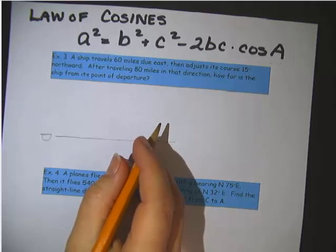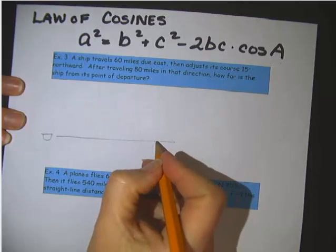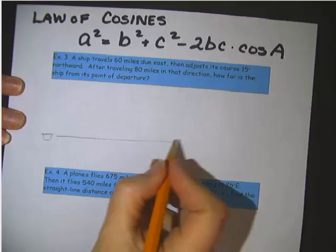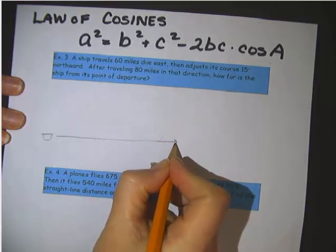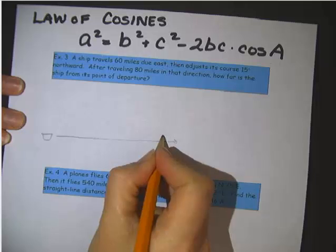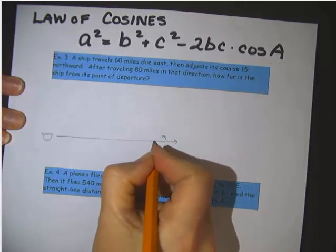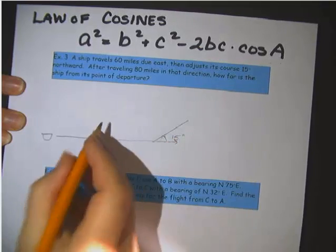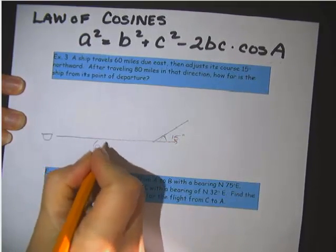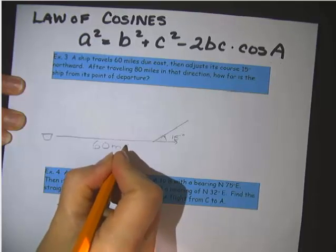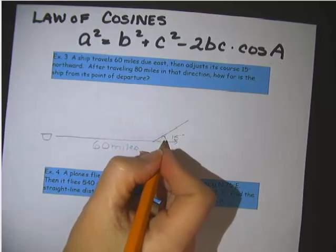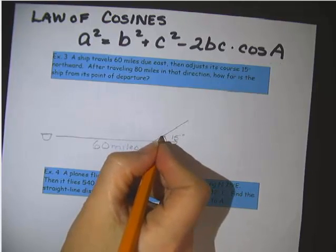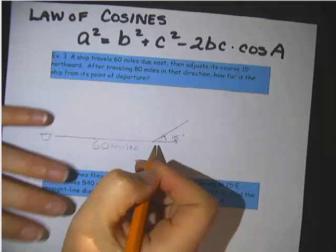And after traveling 60 miles, it adjusts its course 15 degrees. Now I see a lot of times when people draw this one, they try to go 15 degrees in this direction. But remember, it's going to adjust its course, so it's going this direction, and then it needs to turn 15 degrees. So this is actually where our 15 degrees is. 60 miles east. And then it turns its course northward, so of course that would be up 15 degrees. So make sure you think about how to draw that.